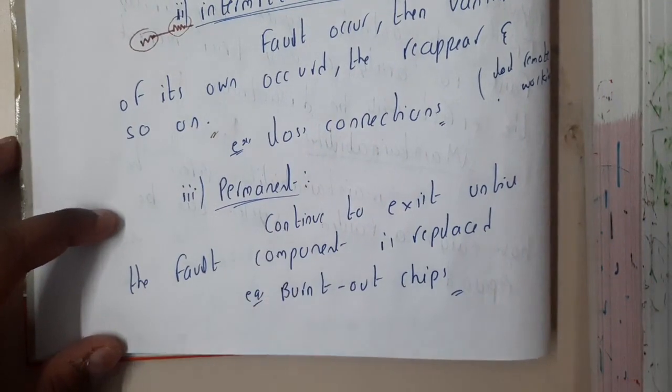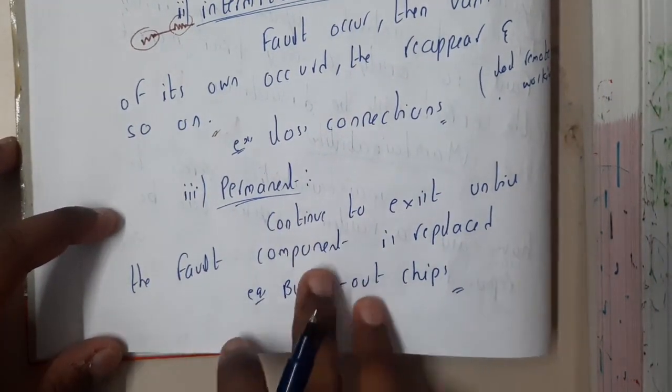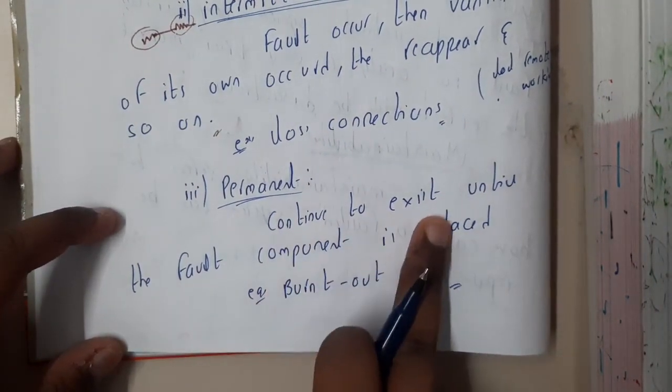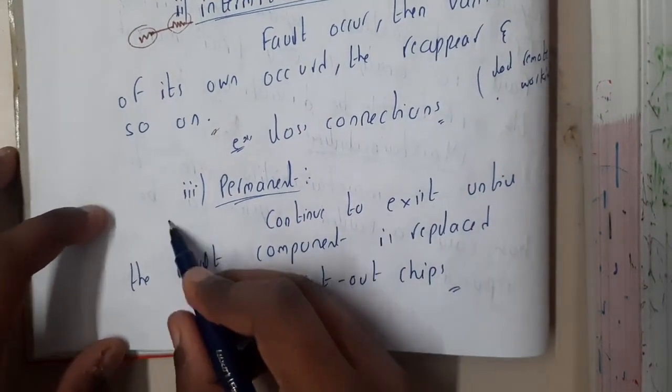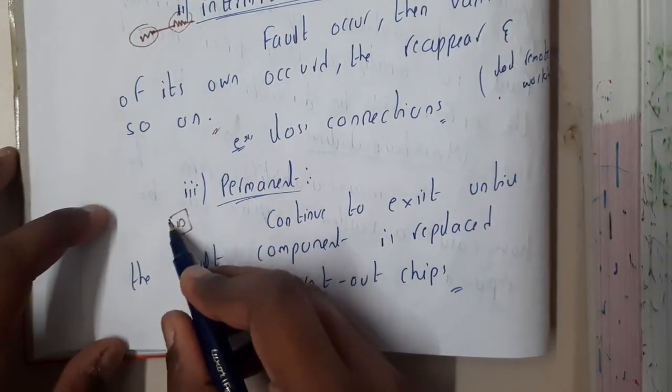Permanent faults are ones you need to replace - it's a permanent fault. They continue to exist until the fault component is repaired or replaced.